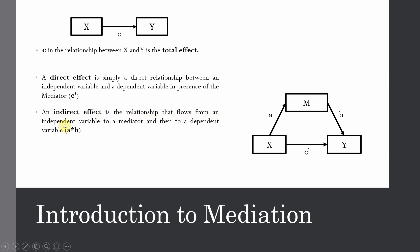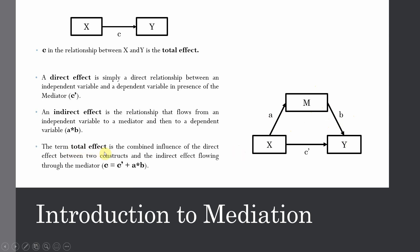An indirect effect is the relationship that flows from an independent variable to a mediator and then to the dependent variable, calculated by multiplying A × B. So the indirect effect flows from X to M, represented by A, and from M to Y, represented by B. The total effect is your direct effect, C complement, plus the indirect effect A × B. Without the mediator, the effect of X on Y is referred to as the total effect.